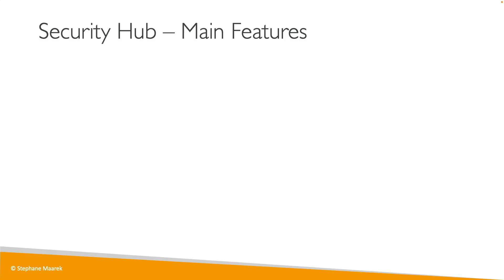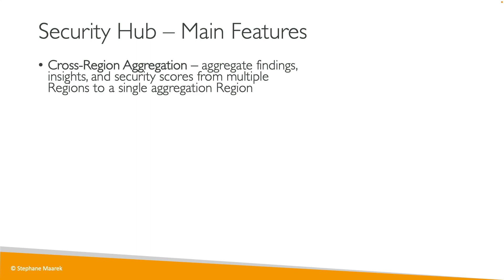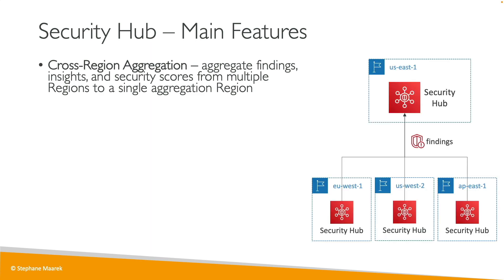Let's talk about some advanced concepts on the AWS Security Hub. First of all, there is cross-region aggregation that's possible for the Security Hub. That means you can send data from different regions into one central region, which makes security administration a lot easier.